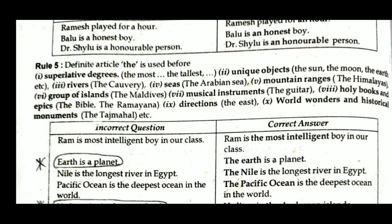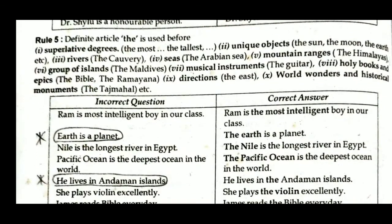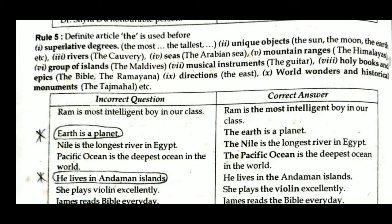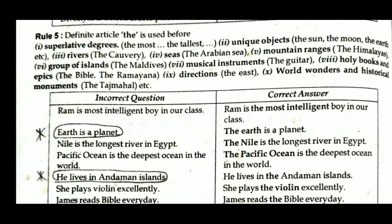The definite article 'The' is used before superlative degrees — for example, 'the most,' 'the tallest.' It is also used before unique objects that are one of a kind in the world, such as the Sun, the Moon, and the Earth.